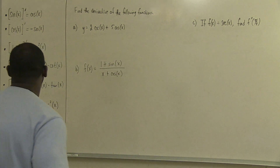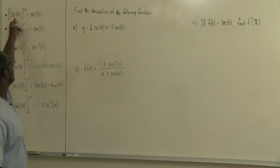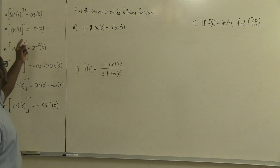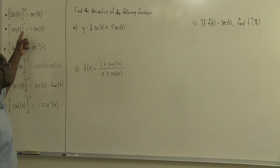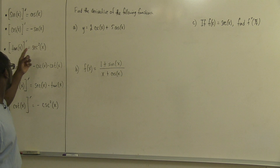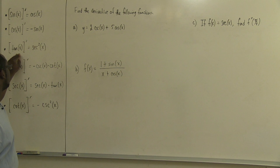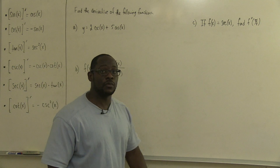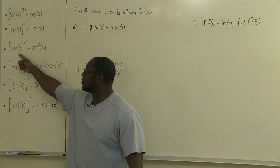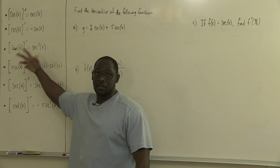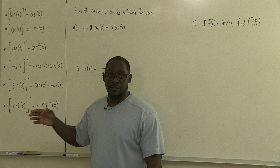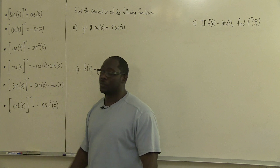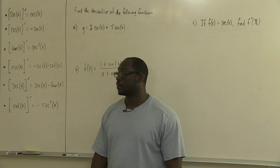To start off, we see that the derivative of the sine function is just the cosine function, and the derivative of the cosine function is just minus sine. Then, if we take the derivative of tangent, we end up getting secant squared. The way we get this is by taking the derivative of its equivalent — sine divided by cosine — and applying the quotient rule, which gives us secant squared x.